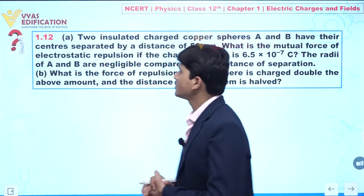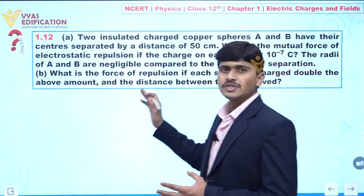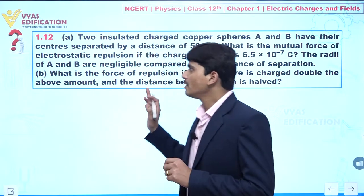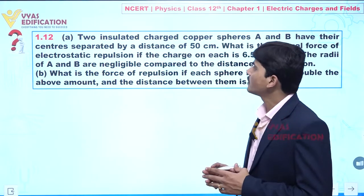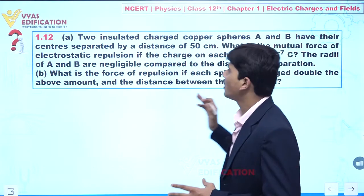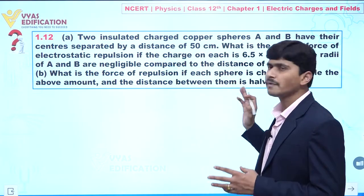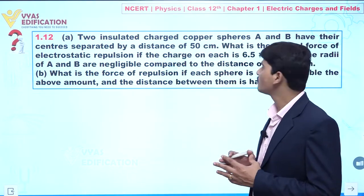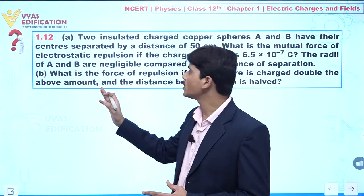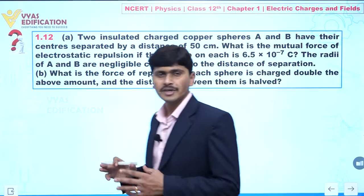We are going to discuss this question, which has two parts, A and B. In part A, two insulated charged copper spheres A and B have their centers separated by a distance of 50 centimeters. We need to find the mutual force of electrostatic repulsion if the charge on each sphere is given.